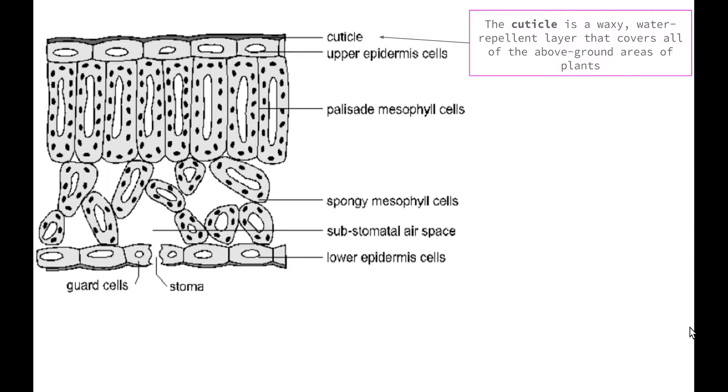The cuticle is a waxy water-repellent layer that covers all of the above-ground areas of the plant. Basically the top and the bottom of the leaf is covered with this cuticle and that's why if you drop droplets of water on a leaf, it will just form little pellets and then run off. This stops too much water from entering the leaf but it also has the effect of stopping water from leaving the leaf and causing it to dry out.